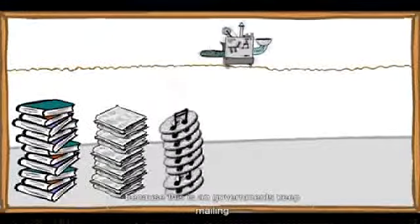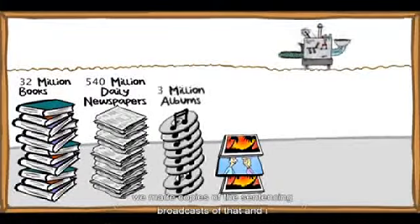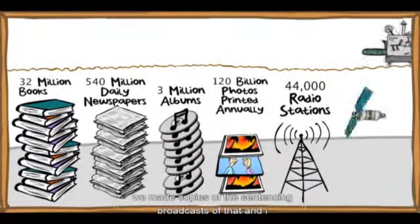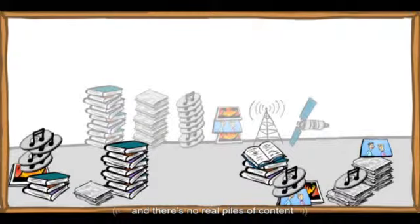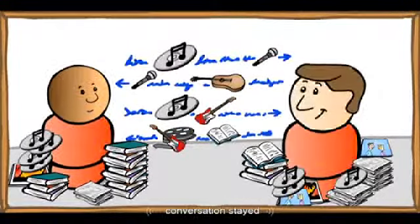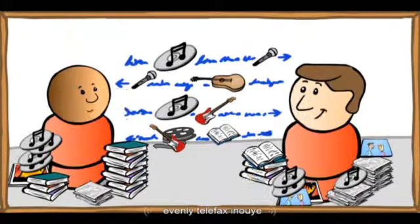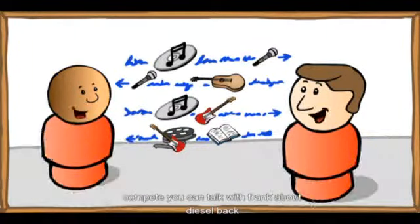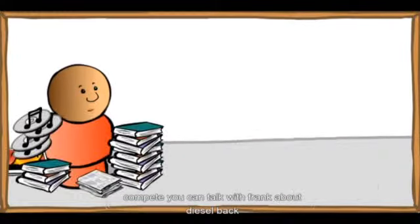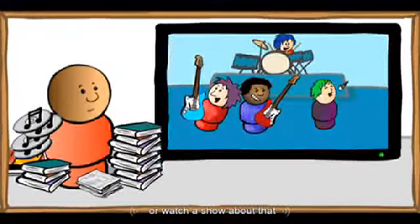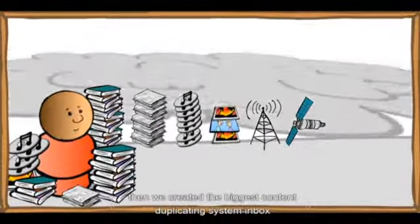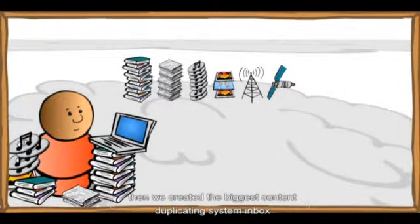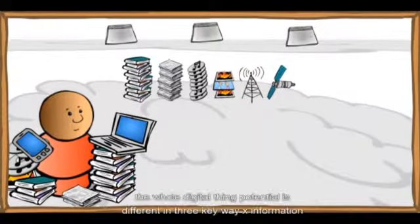In the previous couple of hundred years, we got good at duplicating content — big businesses and governments mainly. We made copies and broadcasts of content, bought records, tapes, and discs, and built our own piles of content. Meanwhile, conversations stayed one-to-one, even with telephones. In a way, content and conversation compete. Then we created the biggest content duplicating system ever: computers, wireless, internet — the whole digital thing.